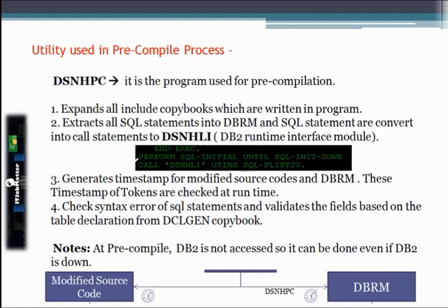The very first stage of COBOL DB2 Program Execution is the pre-compilation process. At pre-compilation we use the utility called DSNHPC. It is a program used for pre-compilation. It expands all included copy books written in the program. It extracts all SQL statements and puts them into the DBRM, and the SQL statements are converted into a call statement to DSNHLI.